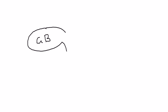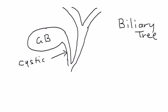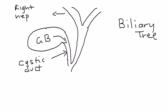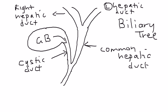Here is the gallbladder, labeled GB, and coming out of it is a system of ducts which comprise what is known as the biliary tree. This one is the cystic duct, where the gallbladder emits bile. Bile comes down the cystic duct, and then there is the right hepatic duct and the left hepatic duct, which combine to form the common hepatic duct.